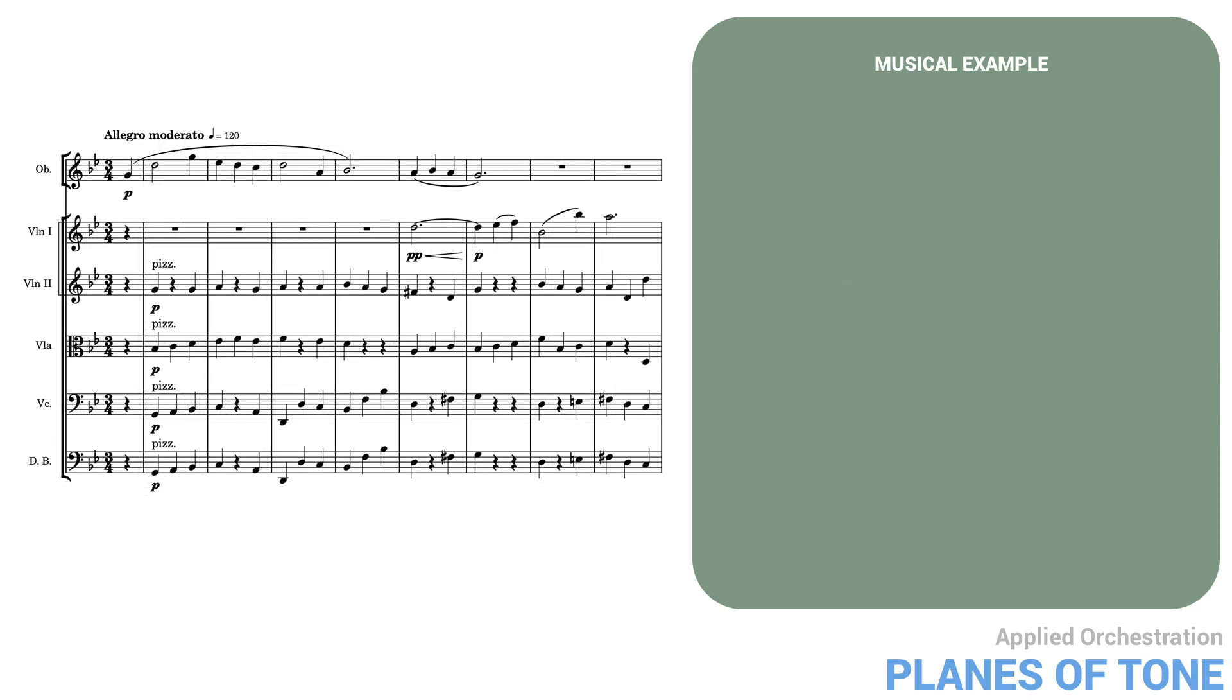Let's continue this same example, making it a bit longer. As the oboe completes its phrase here, the first violins come in with an answering phrase. Even though the first violins and the pizzicato strings are nominally from the same family, the planes of tone remain very clear.